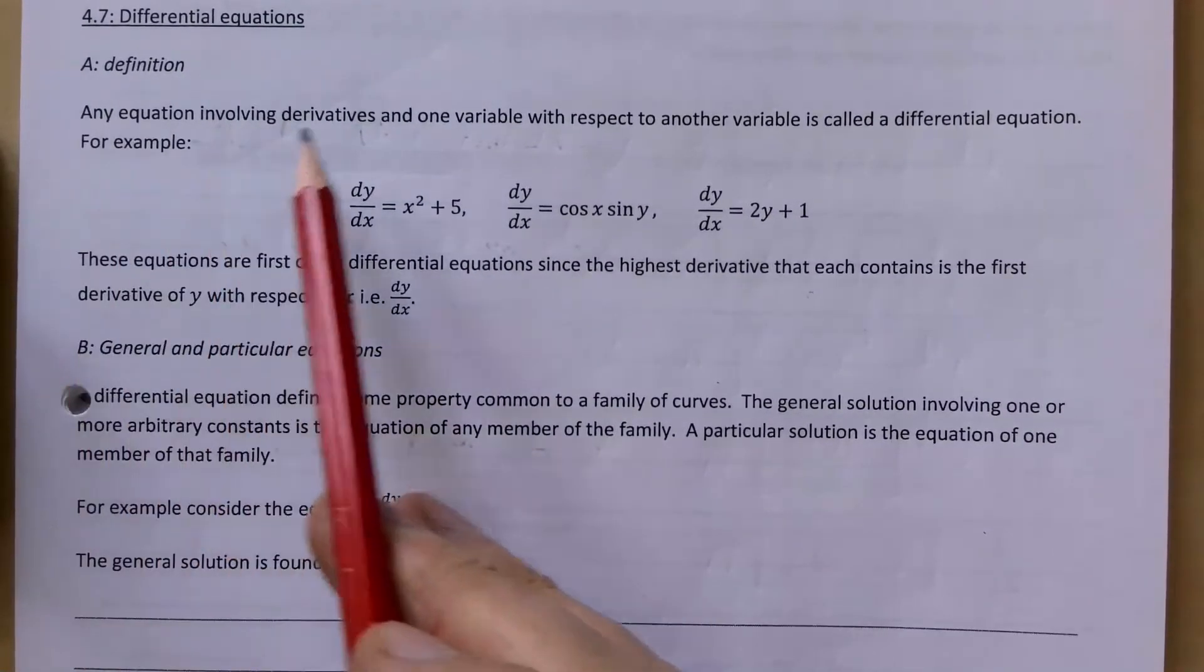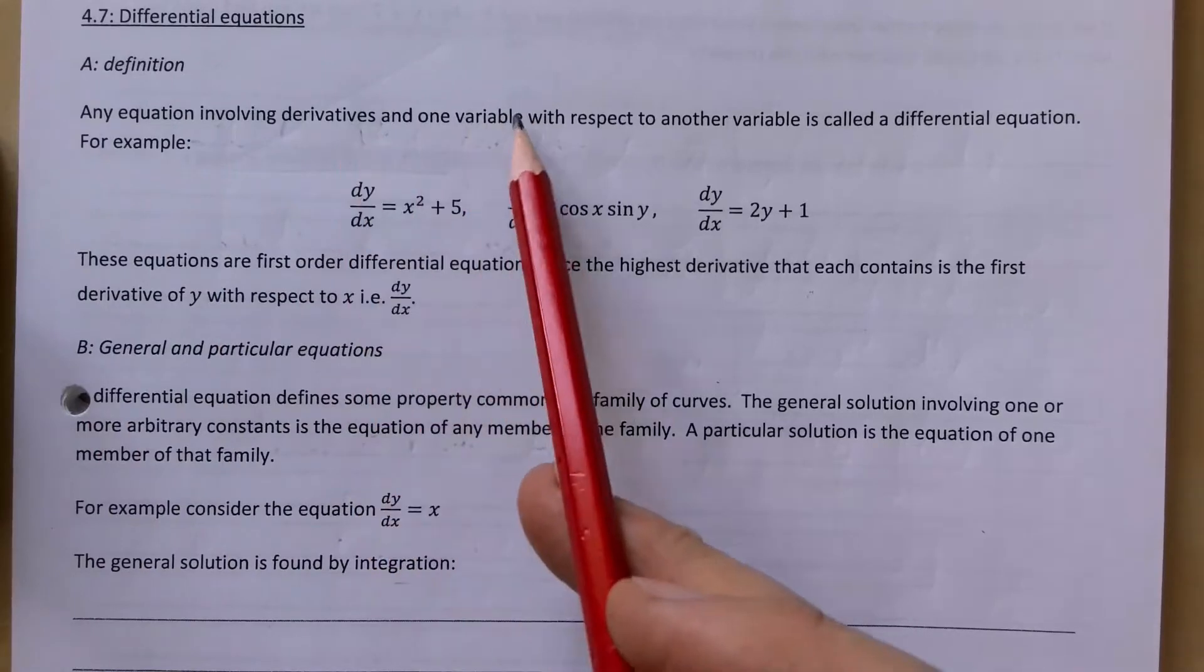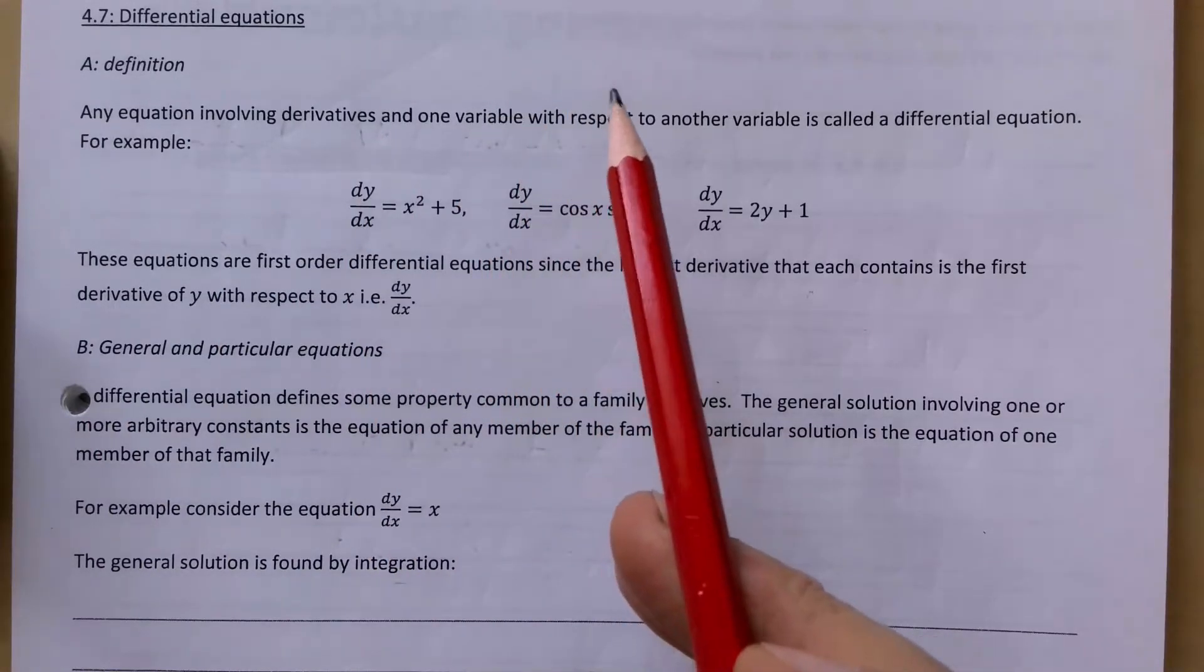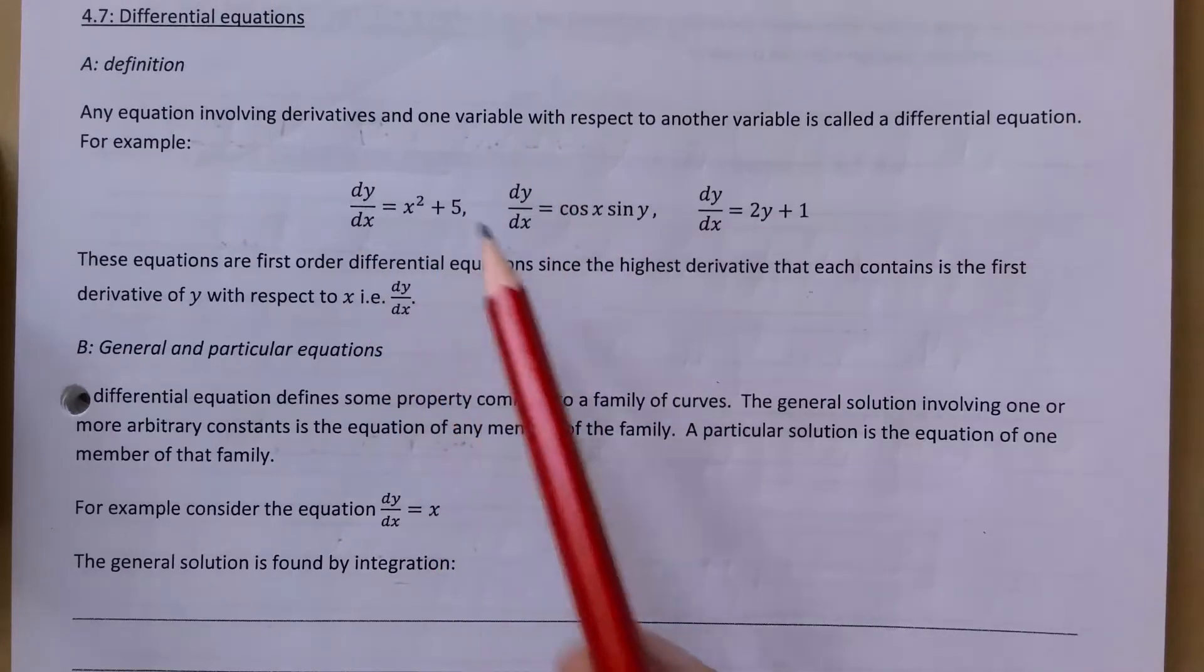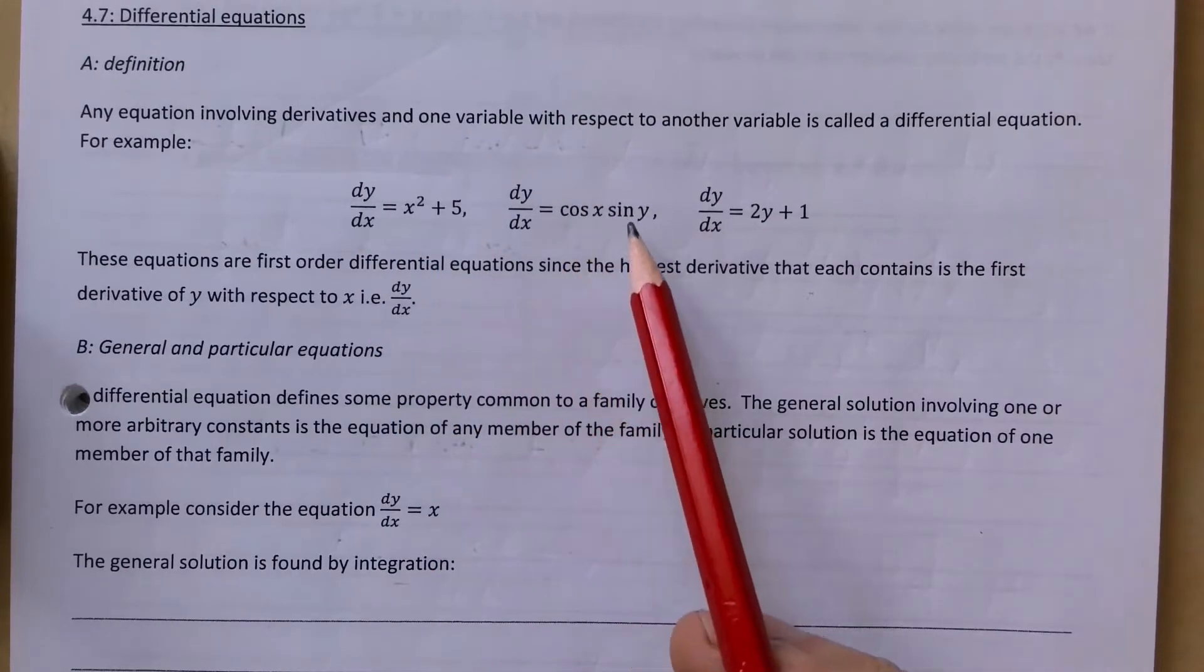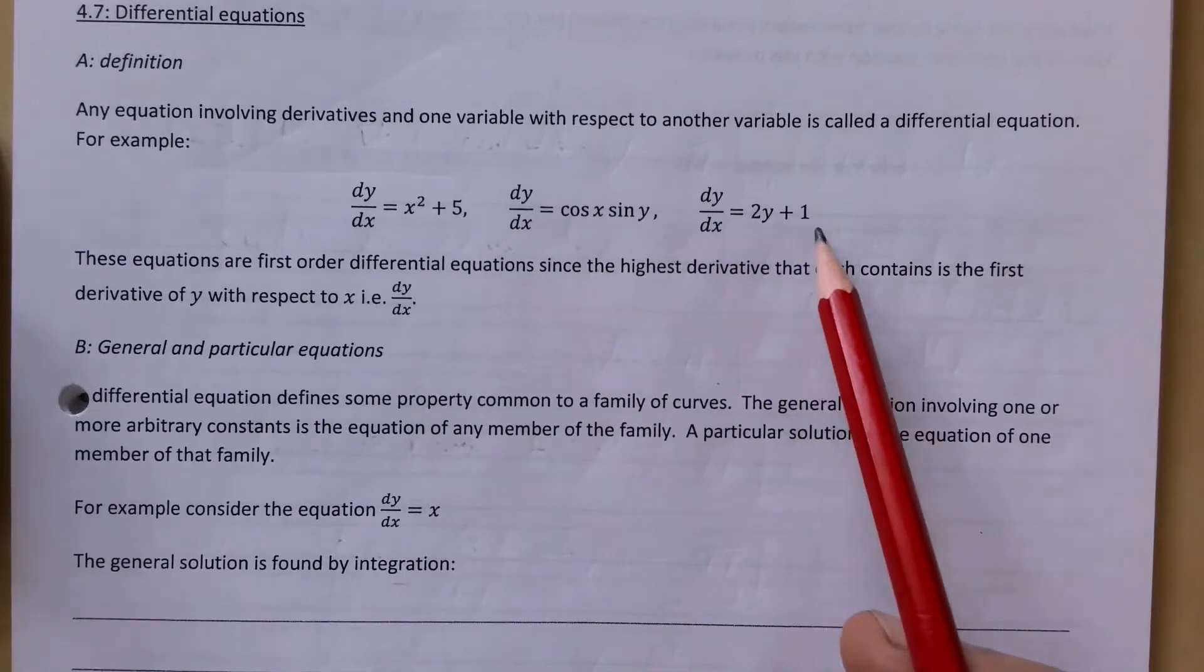Any equation involving derivatives of one variable with respect to another variable is called a differential equation. For example, dy/dx = x² + 5, dy/dx = cos(x)sin(y), or dy/dx = 2y + 1.